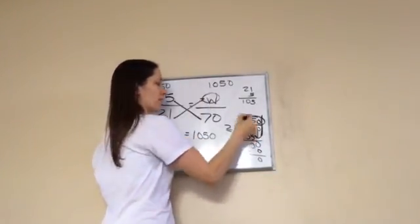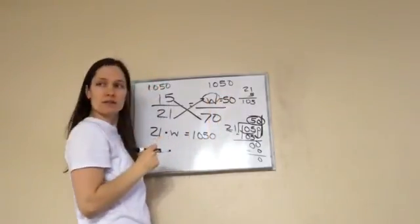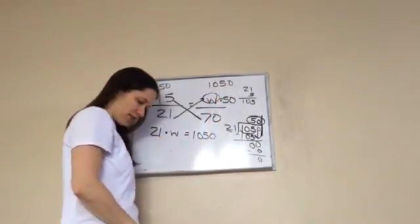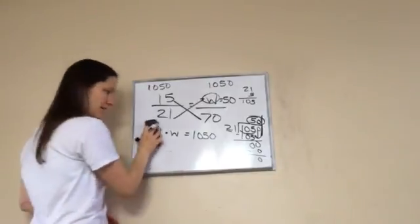So what's my answer W going to be? 50. Very good. So W equals 50. See how we did that? Feel like you understand it? Yep. That's lesson 85.